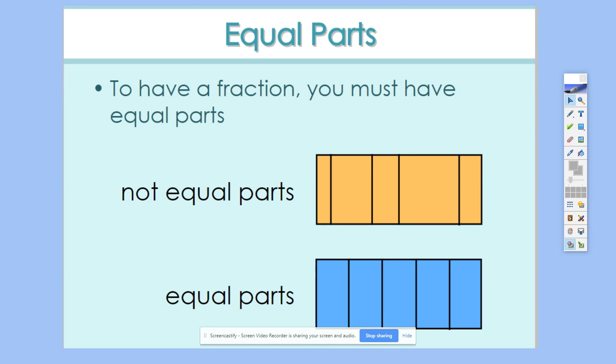In order to have a fraction, you must always have equal parts. So this right here, this is not equal parts. You can tell, look at all these different size pieces. That's not okay. In order to be a fraction, it must have equal parts, so everything has to be equal and you can tell that these are the exact same size.